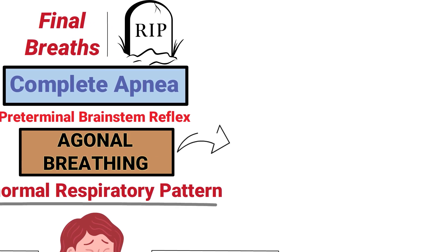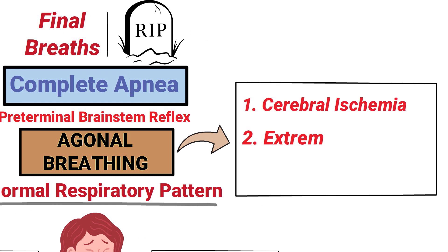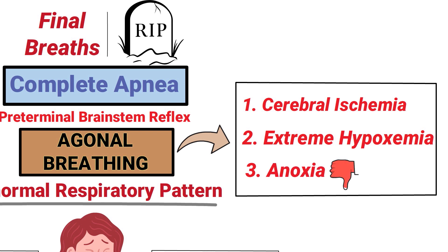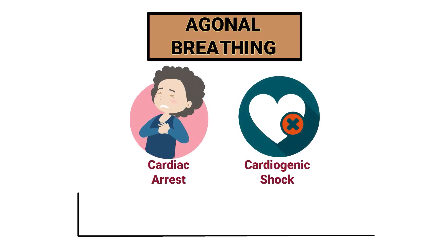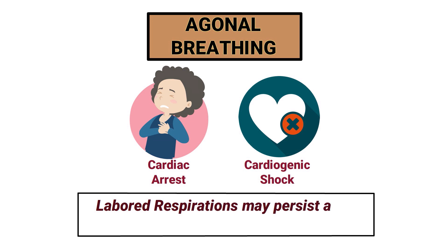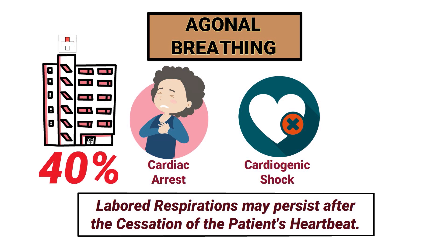Some possible causes of agonal breathing include cerebral ischemia, extreme hypoxemia, and anoxia, which is a total depletion of oxygen. Agonal breathing is often seen in patients with cardiac arrest or cardiogenic shock, where labored respirations may persist after the cessation of the patient's heartbeat. In fact, it occurs in approximately 40 percent of cardiac arrest cases that take place outside of the hospital setting.